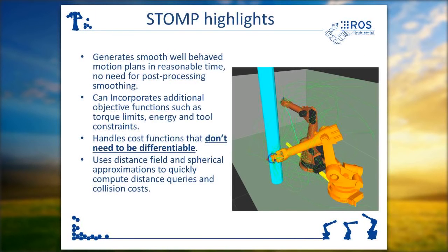Some of the strengths of STOMP are that, as mentioned, it generates smooth, well-behaved motion plans in reasonable time. This eliminates the need for post-processing smoothing, since smoothing is itself a goal in the optimization process of STOMP. In addition to smoothing and obstacle avoidance, STOMP can accommodate other objective functions such as torque limits, energy considerations, and tool constraints.